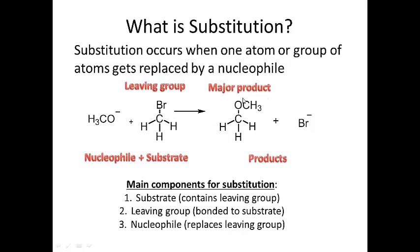Looking at the product, you have a new bond between the carbon on the substrate and the oxygen from the nucleophile. The bond between carbon and bromine is broken. On the left side of the arrow you have your nucleophile and your substrate — which is the molecule that contains the leaving group — and on the right side of the arrow you have your products.